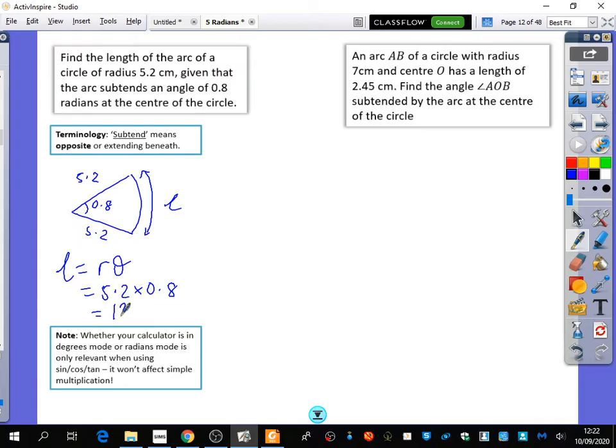So the length of the arc is the radius multiplied by theta. So it's 5.2 times 0.8, which is 4.16 centimeters. This doesn't even require your calculator to be in radians mode, because you're not doing sine, cos, or tan of an angle. You're literally just multiplying things together. And if you were to try and convert this into degrees, and then do it like the GCSE way, you'd still come up with 4.16 centimeters.